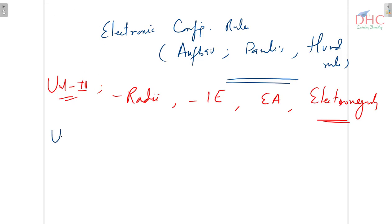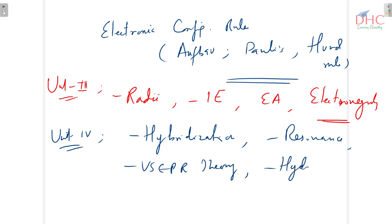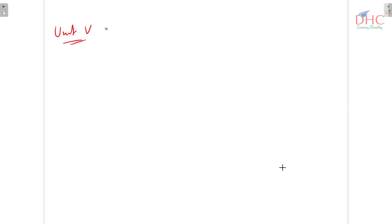Unit 4 is chemical bonding. The important topics are hybridization, resonance, VSEPR theory, and hydrogen bond. These are the important questions in unit 4, that is chemical bonding.